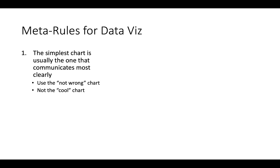The first meta rule for data visualization is that the simplest chart is usually the one that communicates the most clearly — and that's our goal: to communicate data clearly using pictures. Data visualization is not a science in that there is one proper right answer for every situation. Every answer is going to be on a continuum of wrong to not wrong.